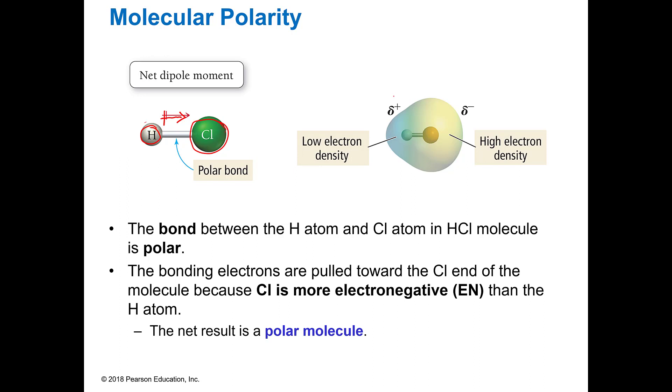You'll have low electron density for a partial positive charge on one end and higher electron density for a partial negative charge on the other end. This is going to result in a polar molecule because the electrons are not evenly distributed.